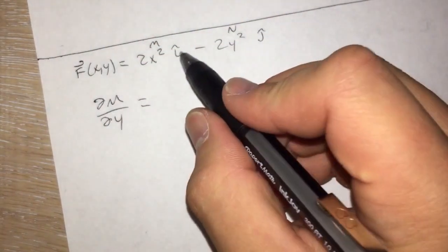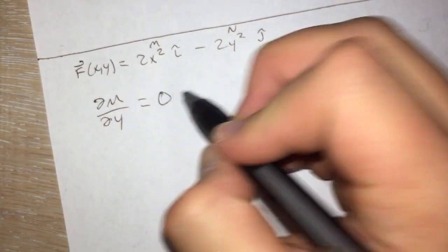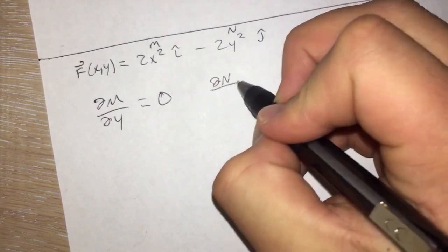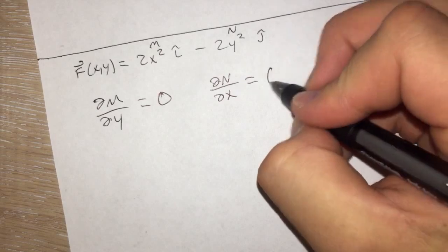Which is equal to, there is no y here, so when we take the partial derivative this is just going to be 0. And then when we do the partial derivative of n with respect to x, there is no x in this function, so this will also be 0. So you know this is conservative. So we're going to do the same thing that we did before.